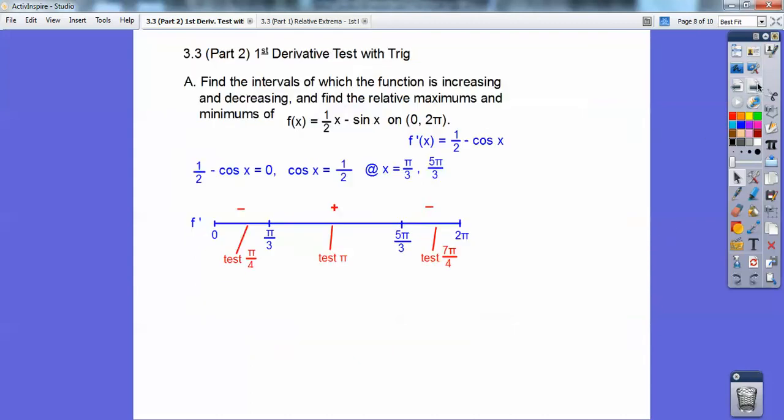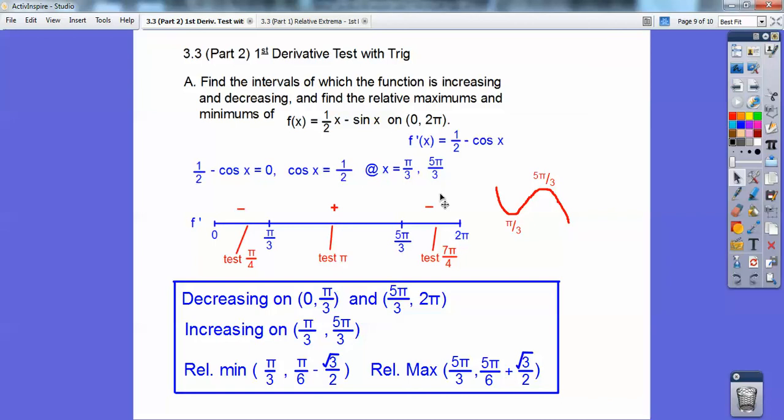Anyways, so that tells me that it's going down, and then it starts going back up at pi over three, and then it starts going back down at five pi over three, so there's a relative minimum here.